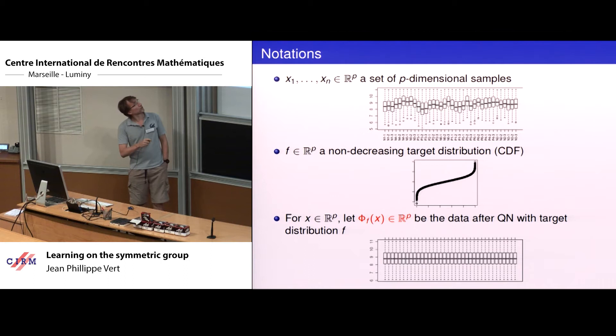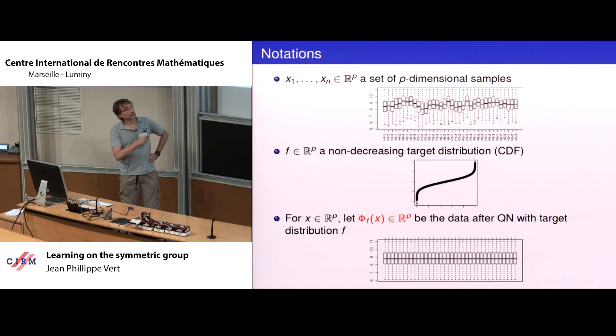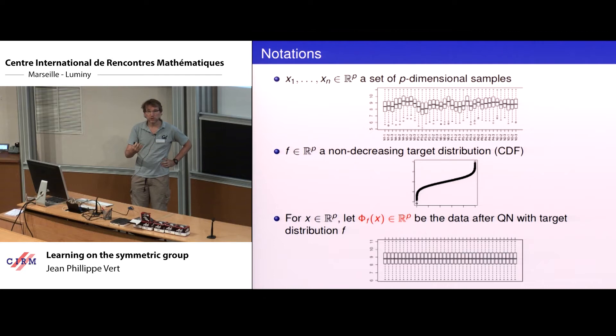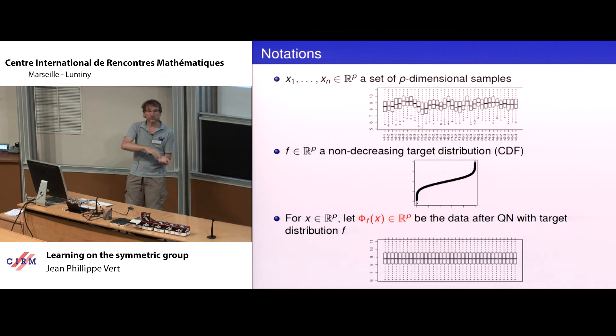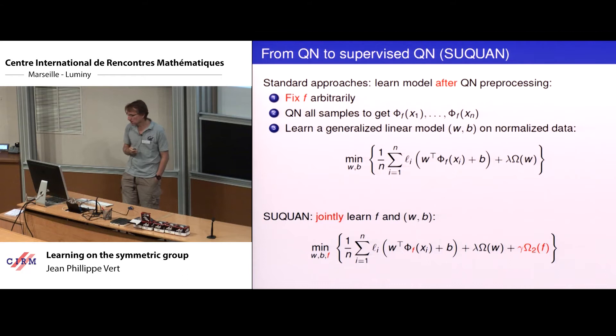Let me set a few notations. I call x the original data—a vector of p dimensions, the expression of p genes for each sample. F is a single CDF function, just an increasing p-dimensional vector. Given x and f, I call φ_f(x) the normalized vector: a p-dimensional vector obtained from x by ranking the values of x and assigning them the values of f.